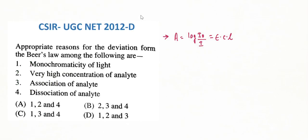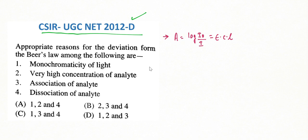Let's start solving questions. The first question is from the CSIR UGC NET exam, December 2012. The question asks: what are the appropriate reasons for the deviation from Beer's Law? The options are: (1) monochromaticity of light, (2) very high concentration of the analyte, (3) association of analyte, or (4) dissociation of analyte.